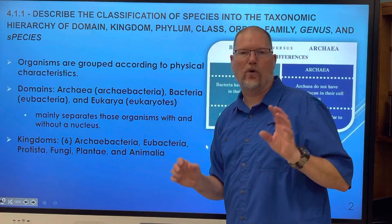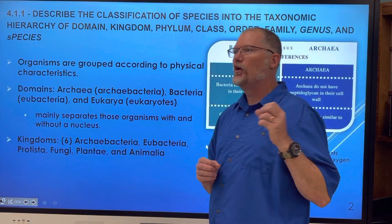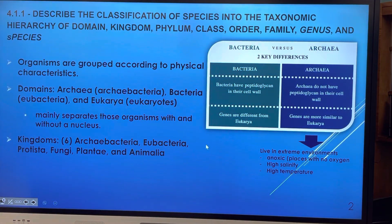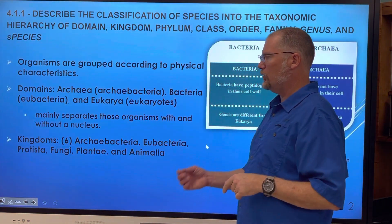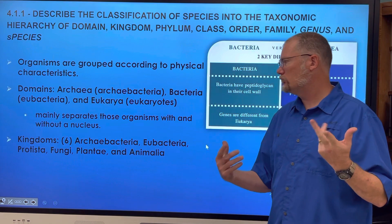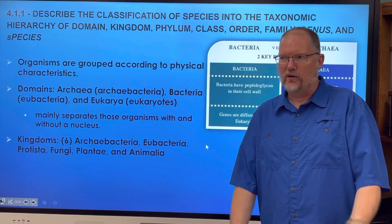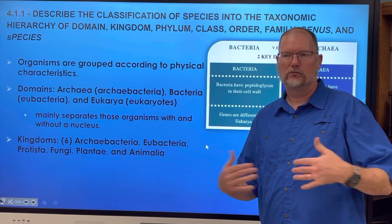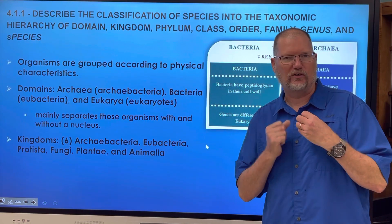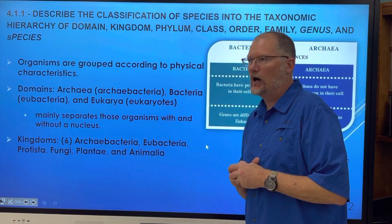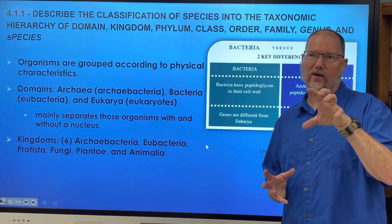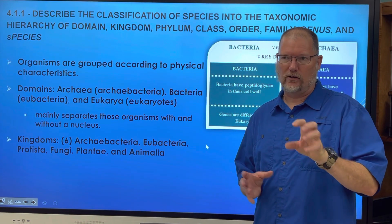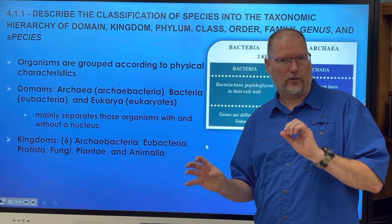So, physical characteristics — do you remember when we were looking at our 10 animals, we were focusing on their physical characteristics? Different domains we're going to talk about today are archaea bacteria, the eubacteria, which are the bacteria probably most familiar to you — on you, in you, on the tabletop, on your fingertips — and then the eukaryotes. The domains separate organisms that have nuclei, the eukaryotes, from the prokaryotes, the ones that don't have nuclei.